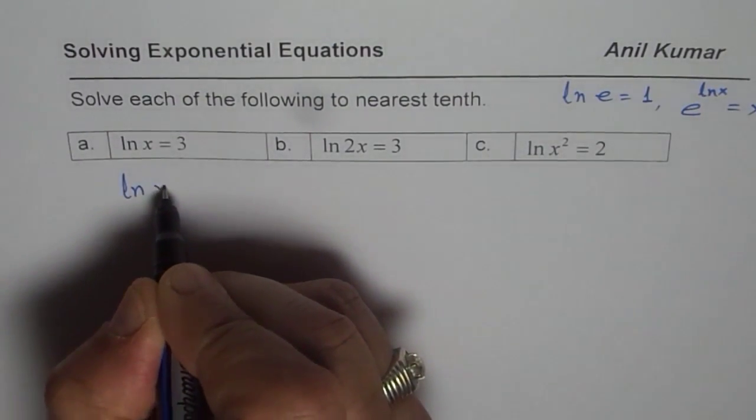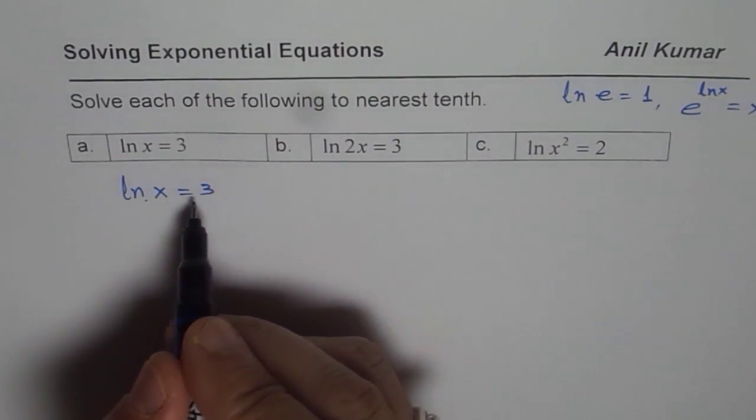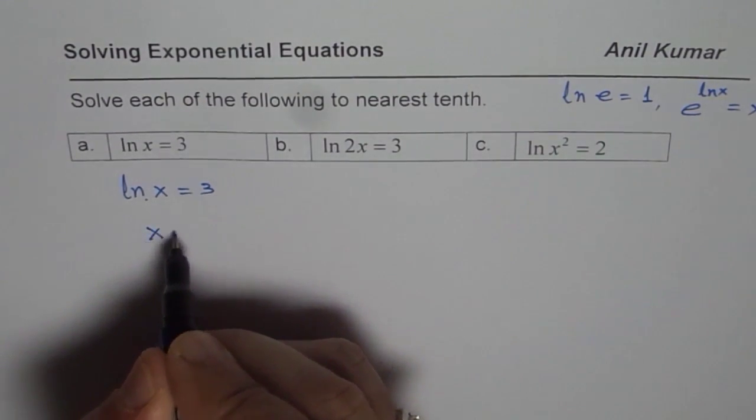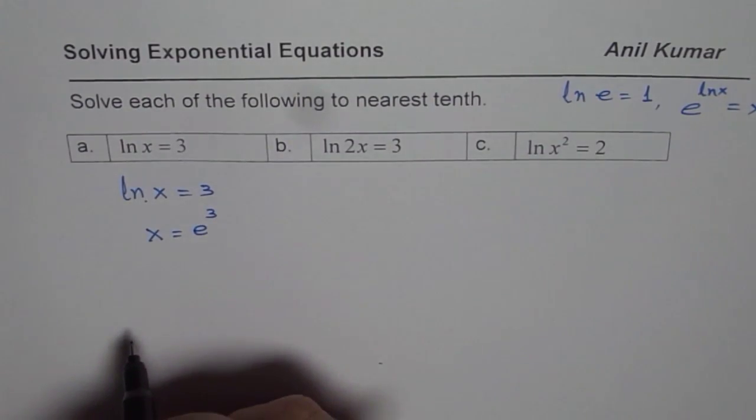We have ln x equals 3. Now base is e, so I can write this in exponential form. In exponential form, I get x equals e to the power of 3. Now I can use calculator and find the answer.